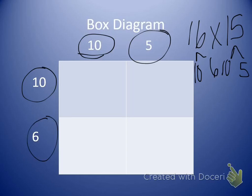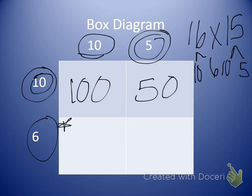The box diagram, we're going to multiply our numbers together and write the product in the middle of the box. So 10 times 10 gives me 100. 10 times 5 gives me 50. Now I move to this box right here and I do my 10 times my 6, which gives me 60. And then I have 6 times 5, which gives me 30.